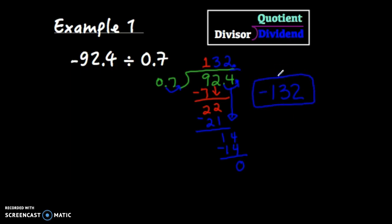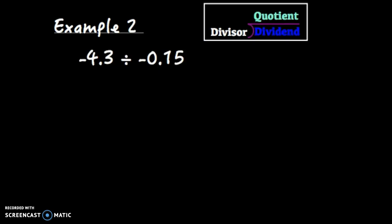Okay, let's look at a second example. This is negative 4.3 divided by negative 0.15 or negative 4 and 3 tenths divided by negative 15 hundredths. This is a negative divided by a negative. So my answer will be positive.